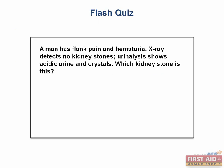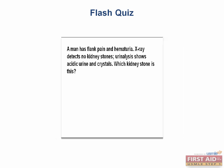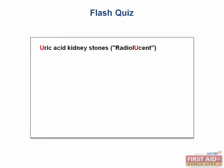Flash quiz: A man has flank pain and hematuria. X-ray detects no kidney stones. Urinalysis shows acidic urine and crystals. This is a uric acid kidney stone. The giveaway is that the stones are radiolucent, so we know it's a uric acid stone. The acidic pH also supports this, because uric acid stones precipitate in a decreased pH.